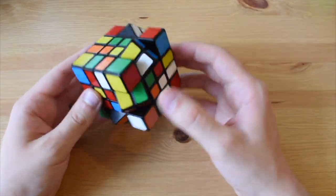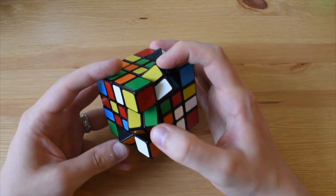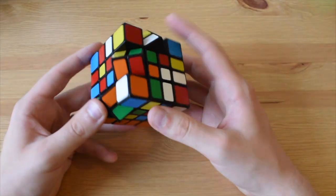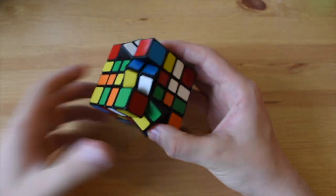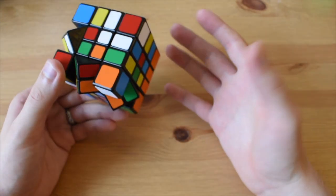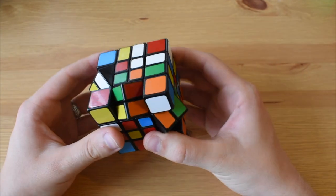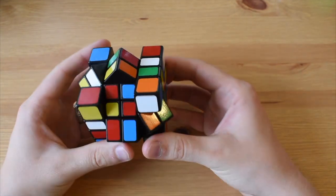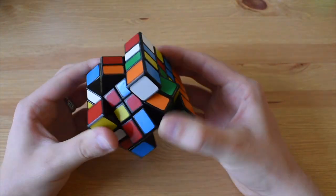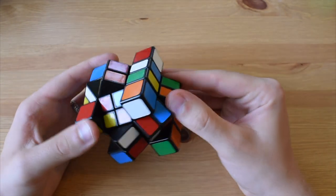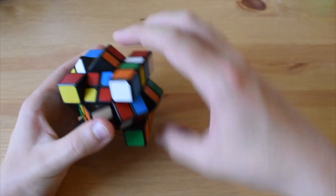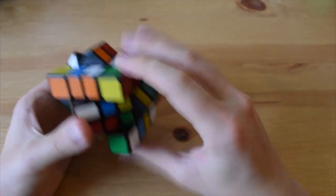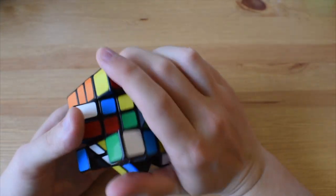Now we just have to sort these final four pieces out, and this is really simple. It's exactly the same algorithm as before. We basically want to just remember what moves we do. If I do an M by 45, and then an E by 45, and then we do the algorithm to swap these two.